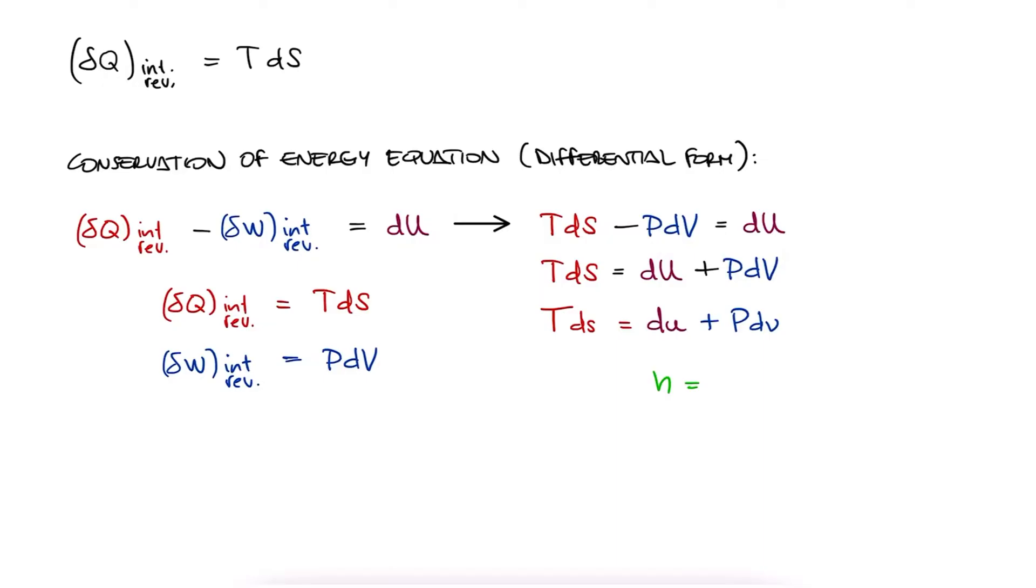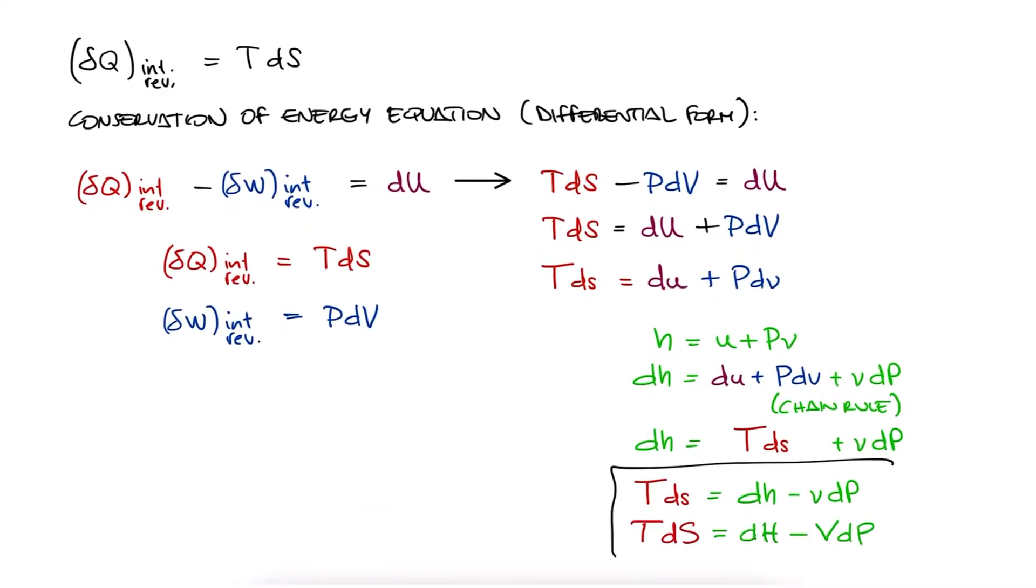Since h is u plus Pv, or dh is du plus Pdv plus Vdp, we can substitute the first two terms with TdS and write TdS equals dh minus Vdp, or the same expression in a non-specific properties version.